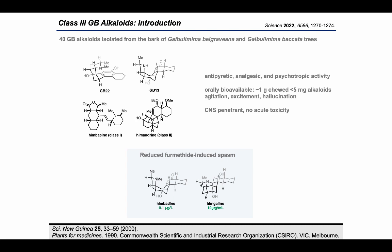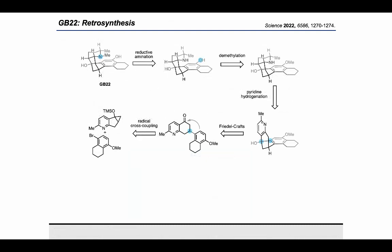Additionally, they are orally bioavailable—chewing a gram of GB bark, which would contain less than five milligrams of GB alkaloids, resulted in agitation, excitement, and hallucination. More specifically, within the class 3 GB alkaloids, hymgaline and hembodine and an N-methylated derivative of GB-13 exhibited potent antispasmodic activity in rabbit intestines. With these syntheses, we set out to access material in order to identify relationships between structure and function, in the hopes of eventually identifying targets of each of the GB alkaloids.